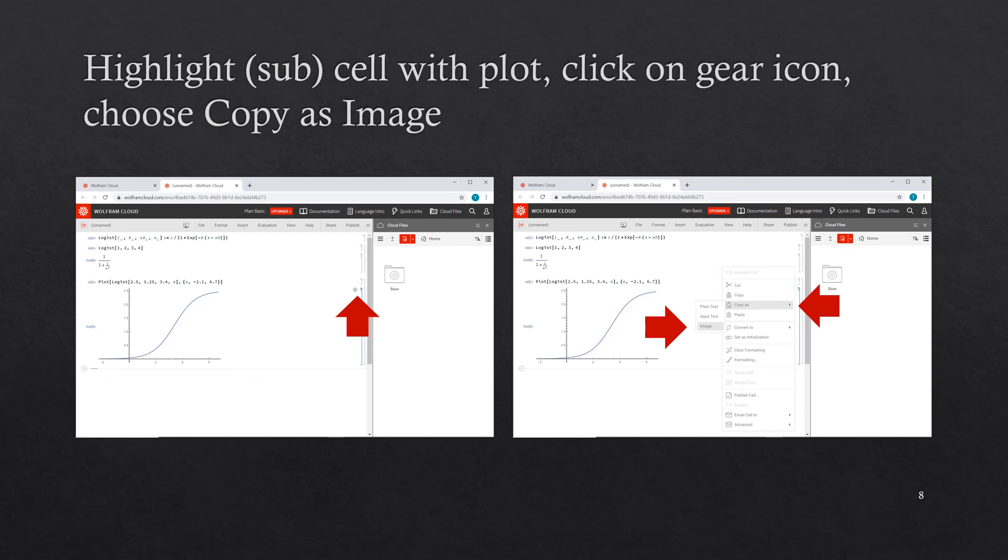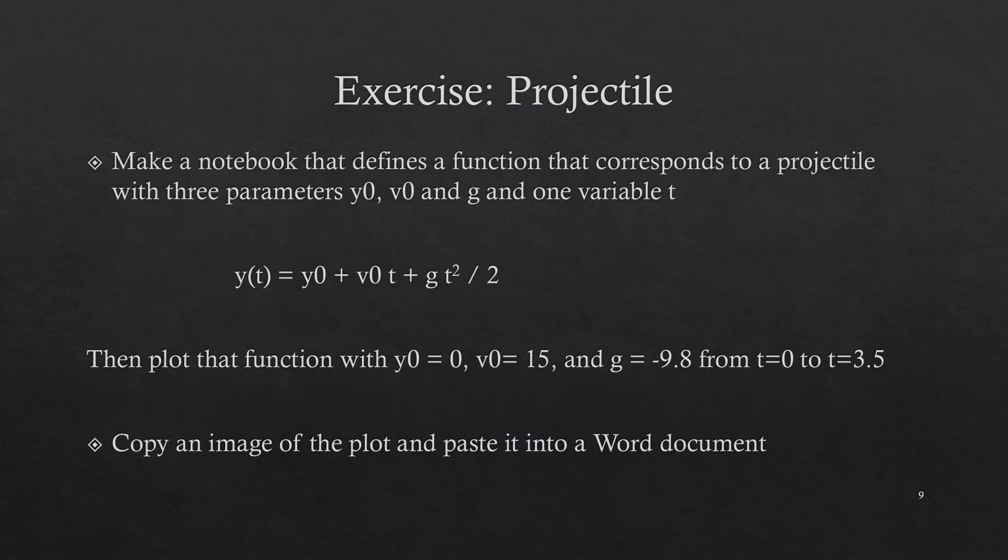Now an exercise for you. Make a notebook that defines a function that corresponds to a projectile. It should have three parameters: y0, v0, and g, and one variable t. And the function is y0 plus v0 times t plus g times t squared divided by 2.